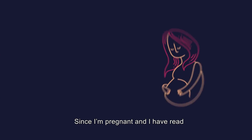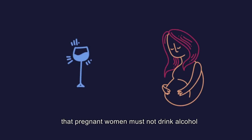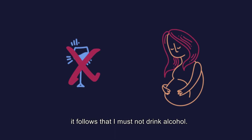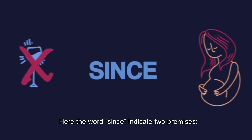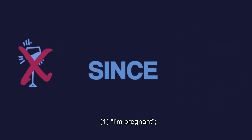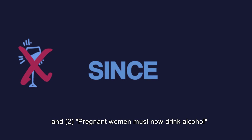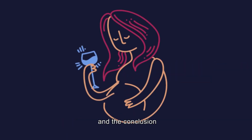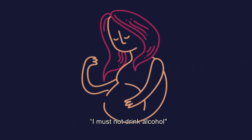For example, consider the following statement: 'Since I'm pregnant and I have read that pregnant women must not drink alcohol, it follows that I must not drink alcohol.' Here, the word 'since' indicates two premises: I'm pregnant, and pregnant women must not drink alcohol. And the conclusion, 'I must not drink alcohol,' is indicated by the expression 'it follows that.'